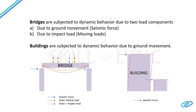For bridges and buildings, two dynamic loads are relevant. The first is seismic force, which is due to ground movement. The second is impact load due to moving loads — bridges are usually subjected to moving vehicle loads, which generate impact. Both bridges and buildings are subjected to seismic force: when the ground moves, the structure's gravity load causes it to resist, generating a horizontal force on the structure.